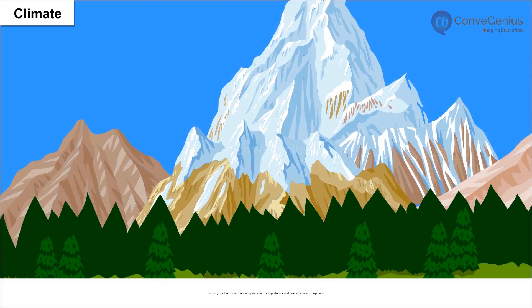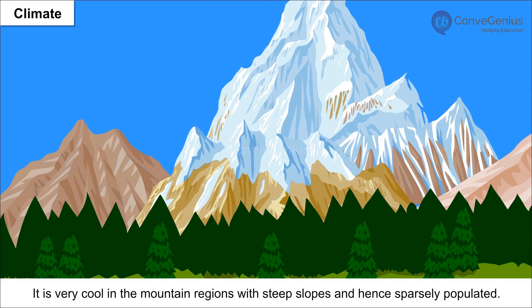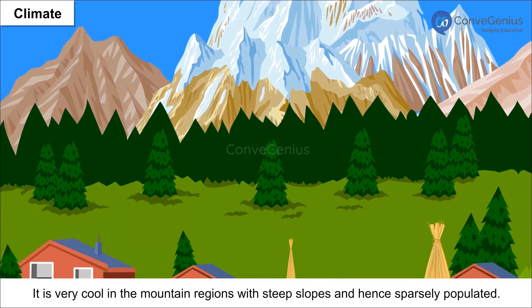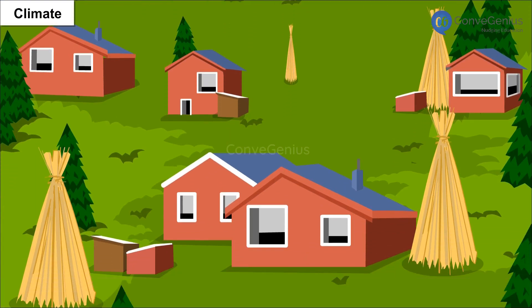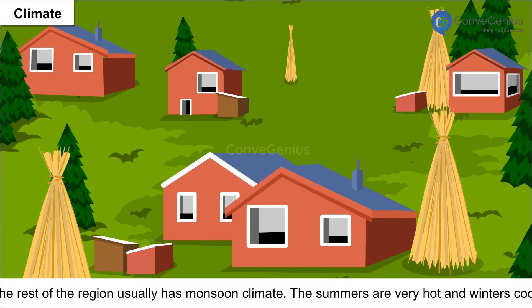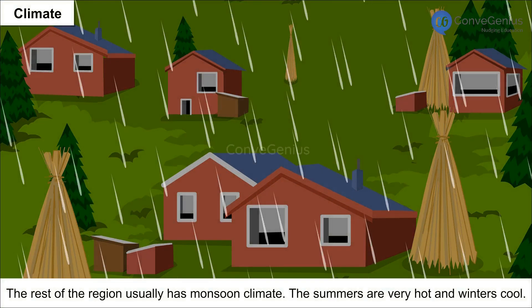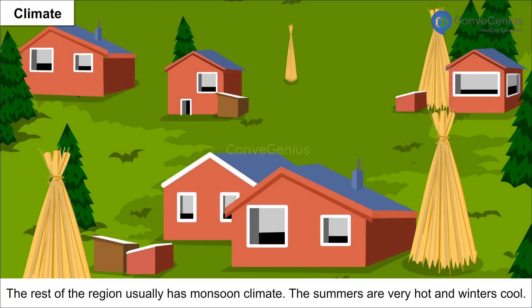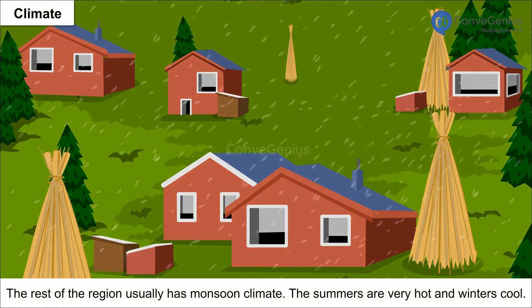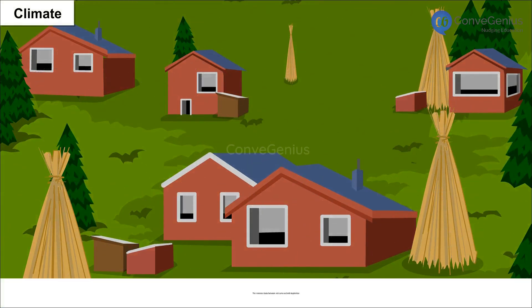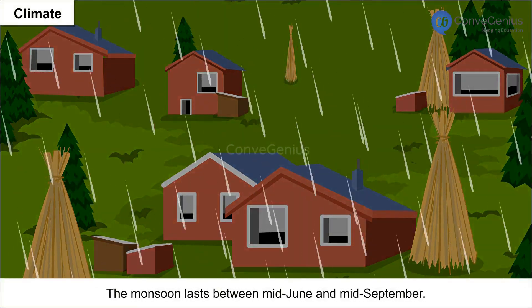Climate. It is very cool in the mountain regions due to steep slopes and hence sparsely populated. The rest of the region usually has a monsoon climate. The summers are very hot and winters cool. The monsoon lasts between mid-June and mid-September.